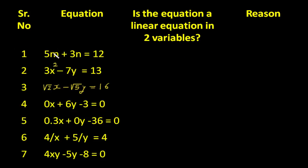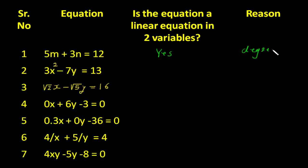Let's take the first example: 5m plus 3n is equal to 12. This equation is in two variables, that is m and n, and every variable has degree 1. The answer is yes, because the degree of each variable is 1.